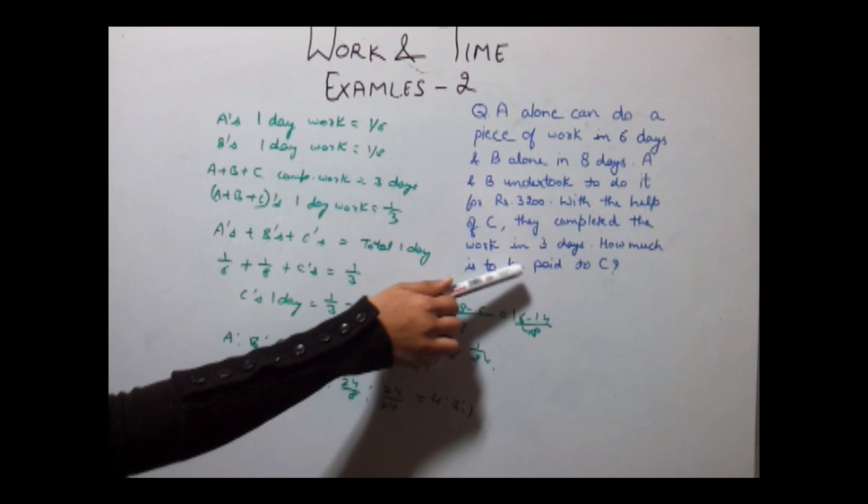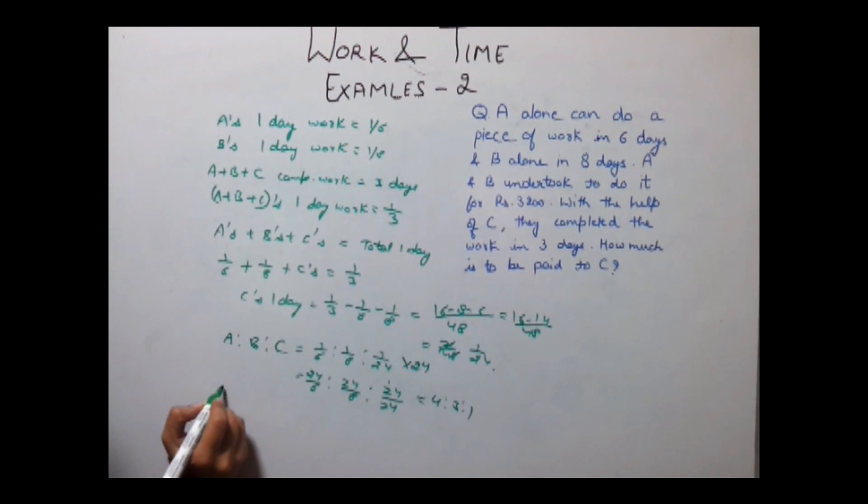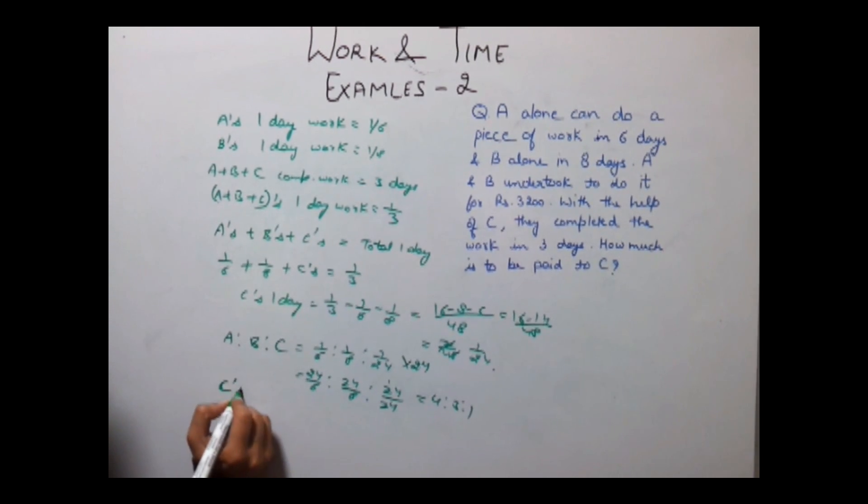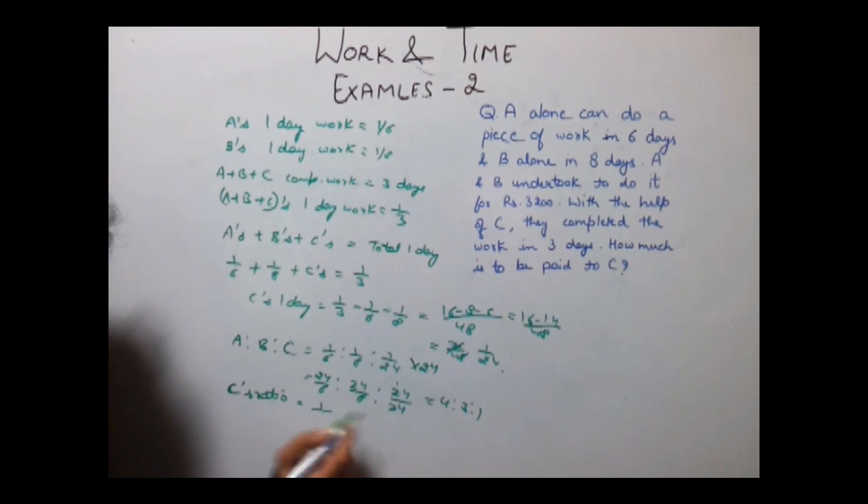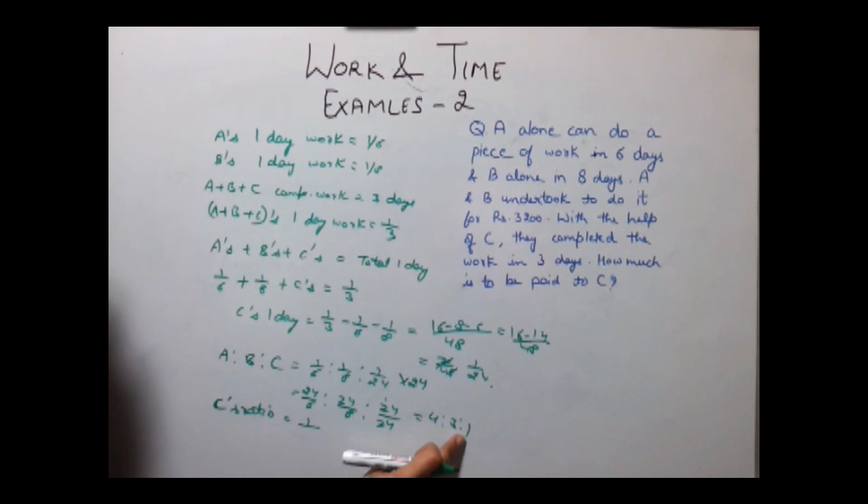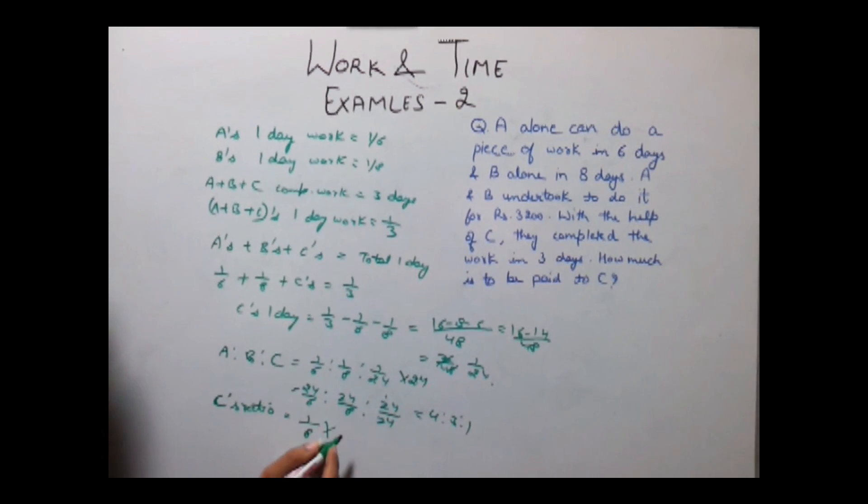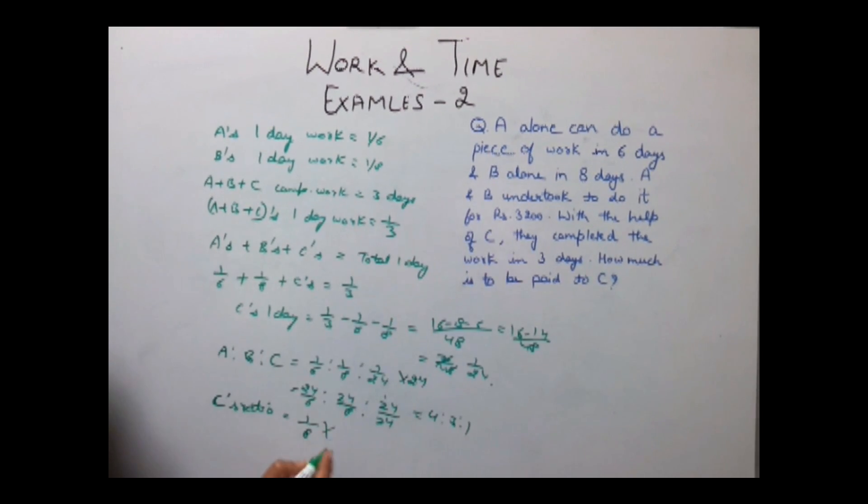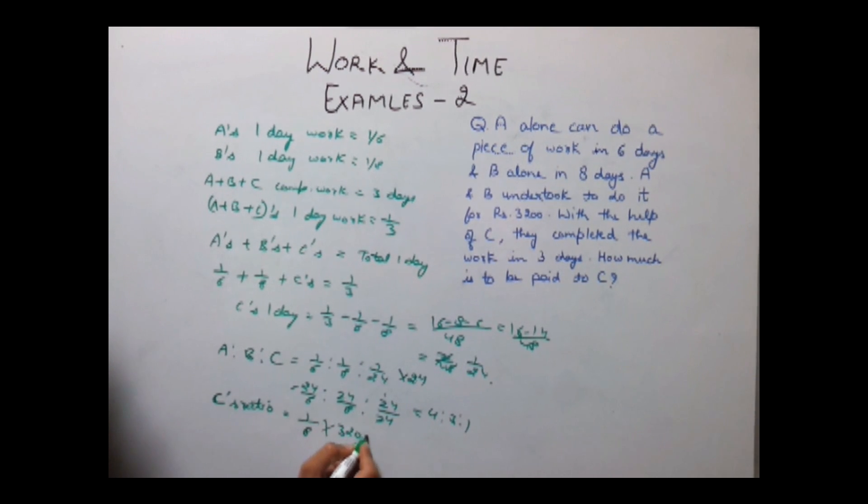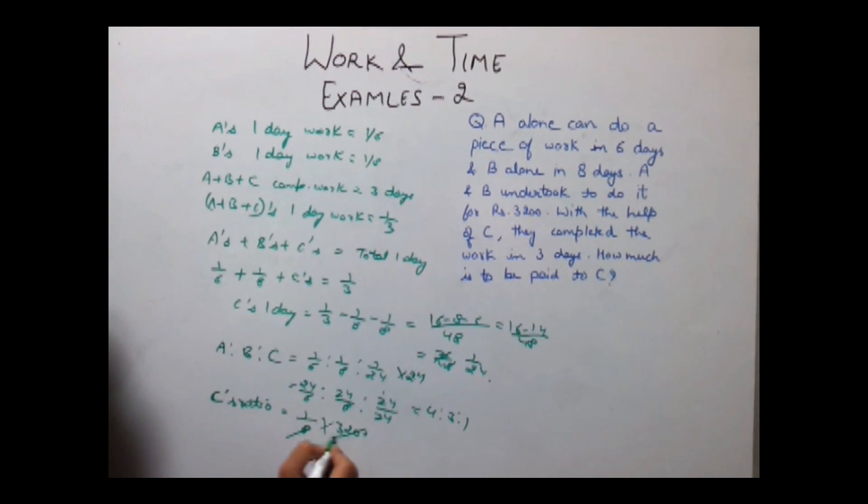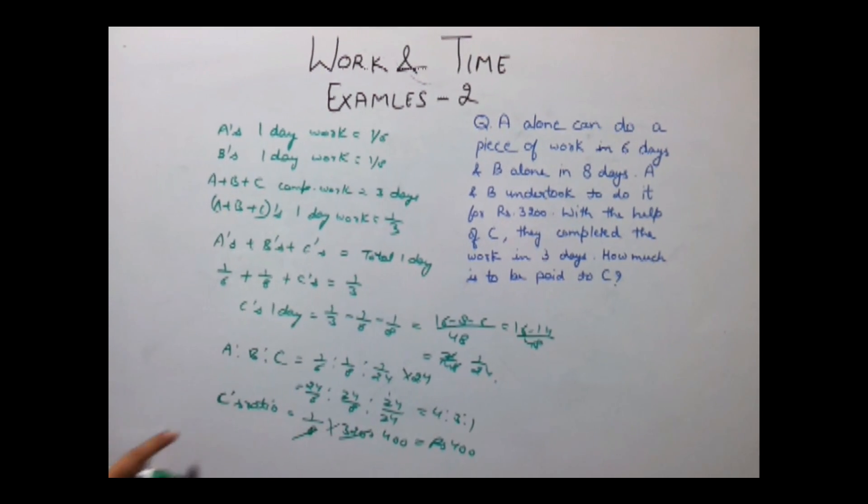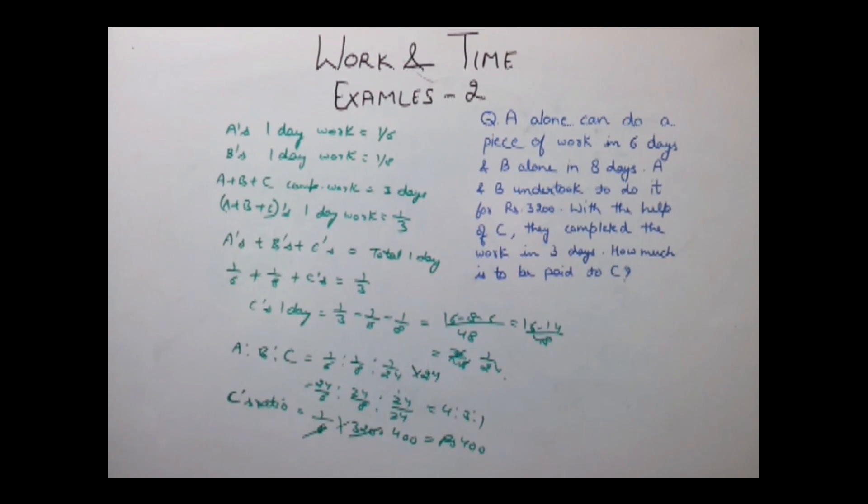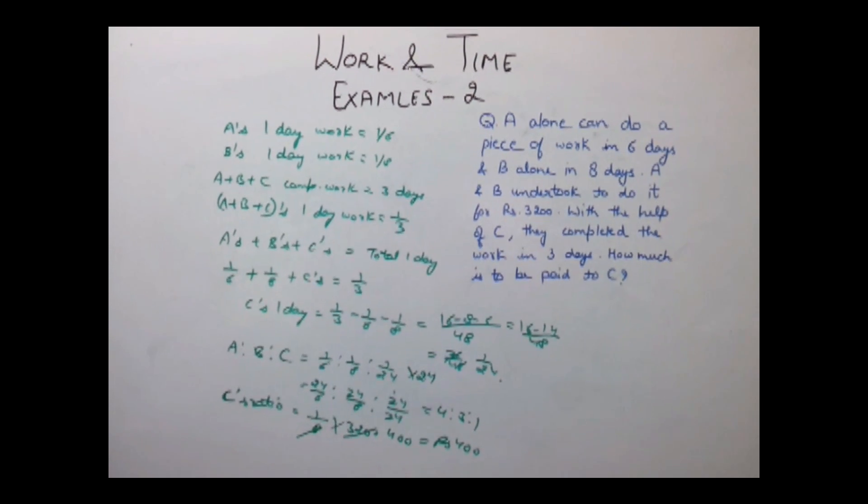We need to find out only what is paid to C. So C's ratio will be equal to 1 by sum of the ratio that is 4 plus 3 plus 1, which is 8, into total amount 3200. This gives us 400. So C will get a share of Rs. 400. Now let's discuss another example.